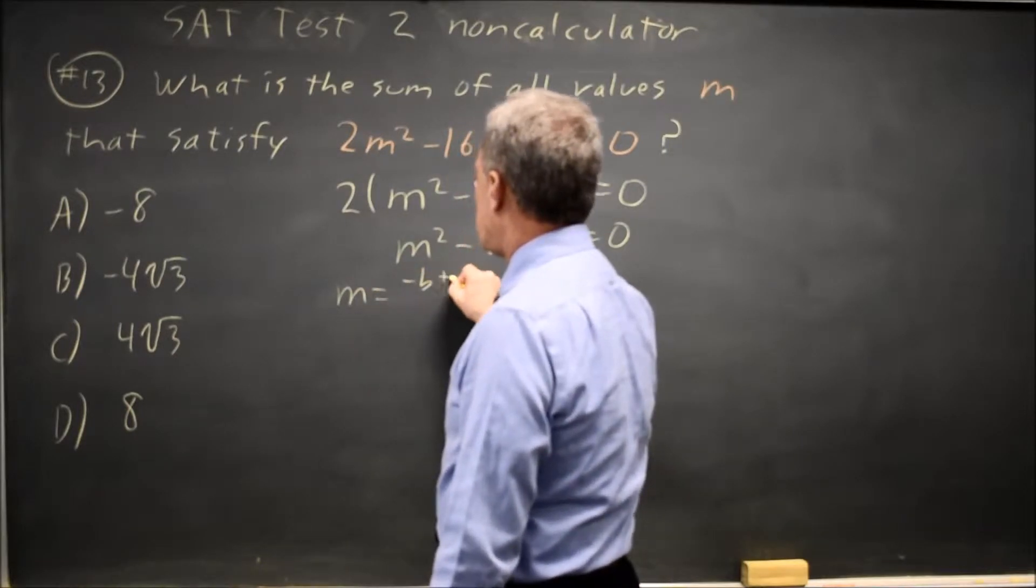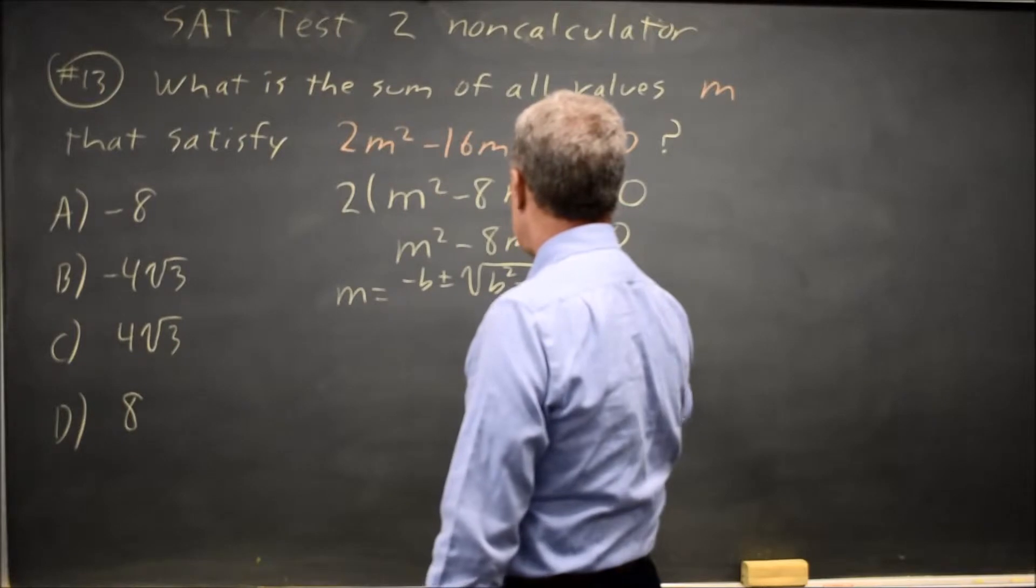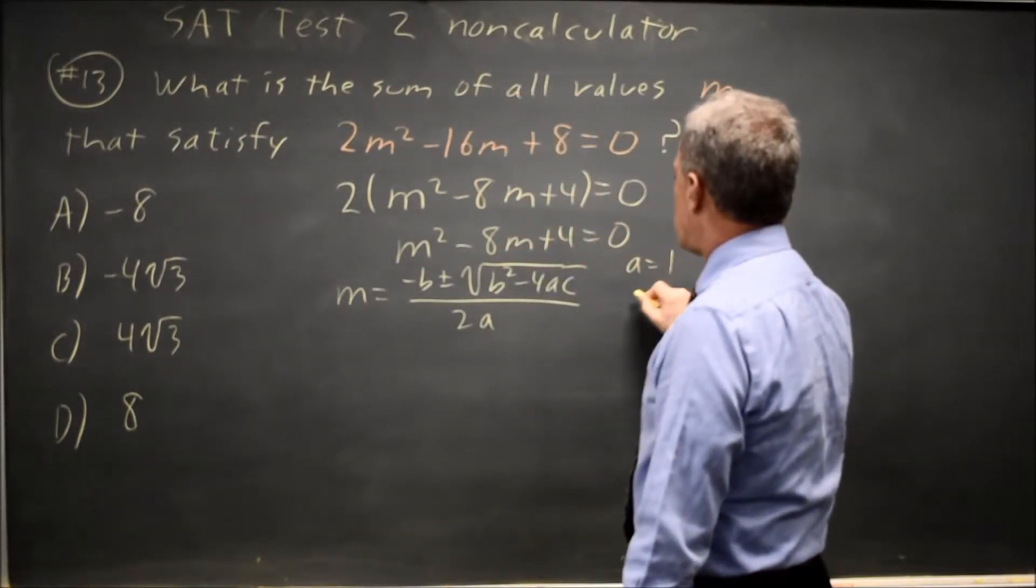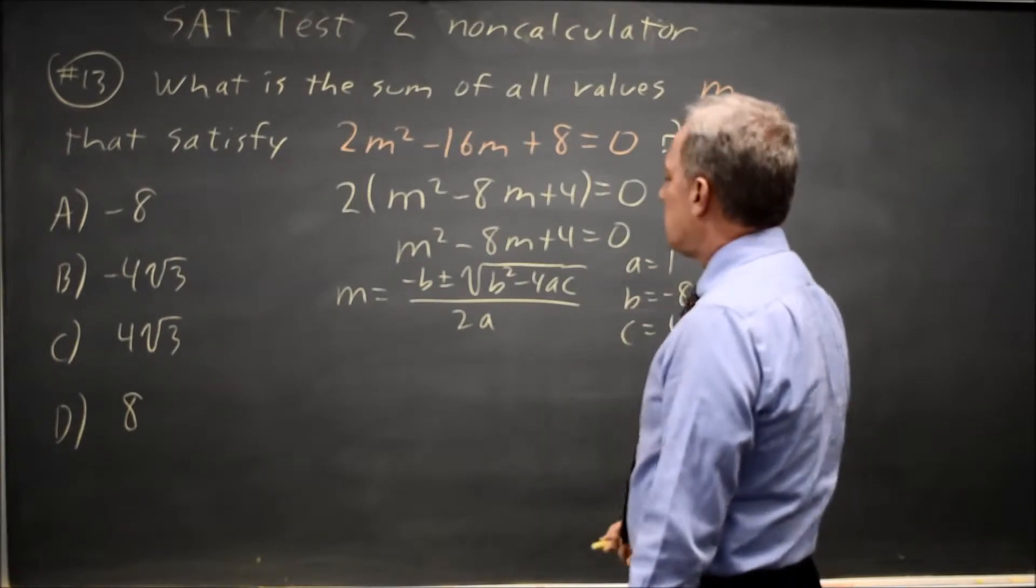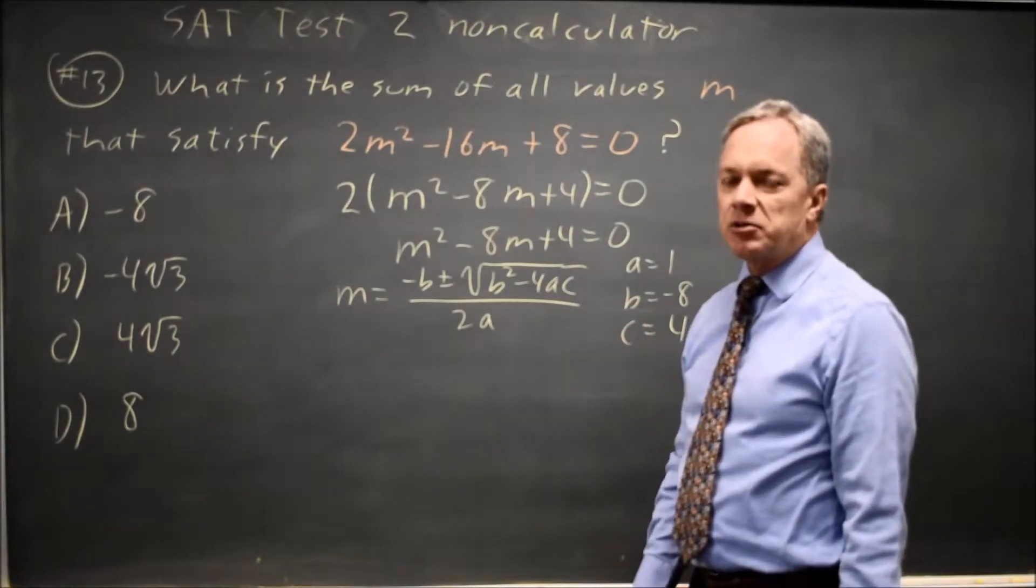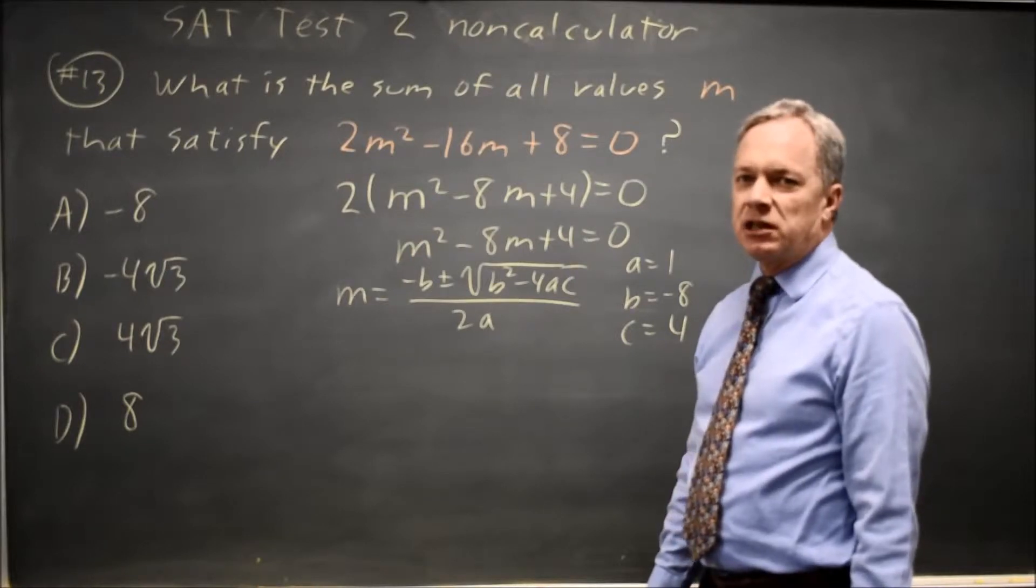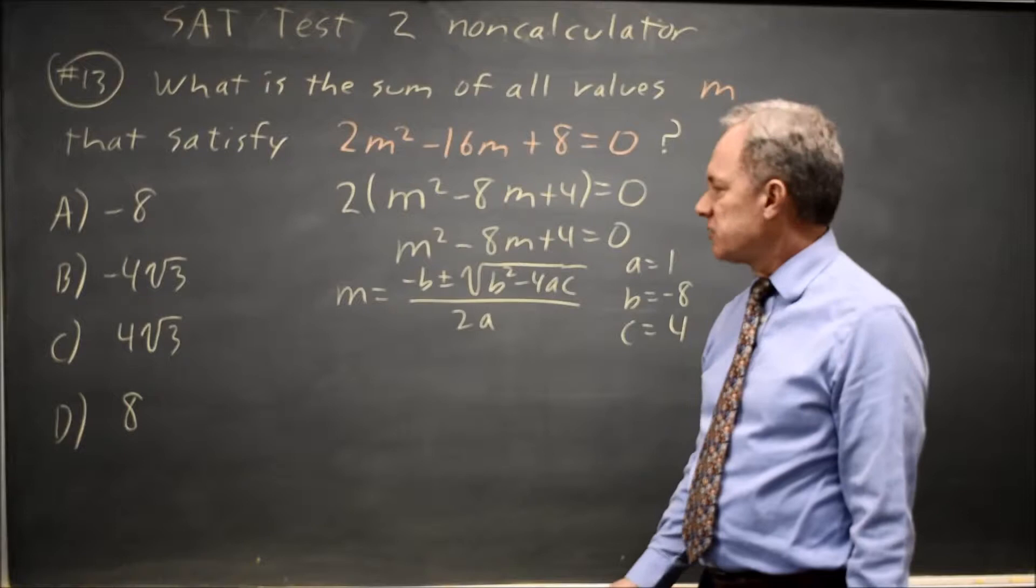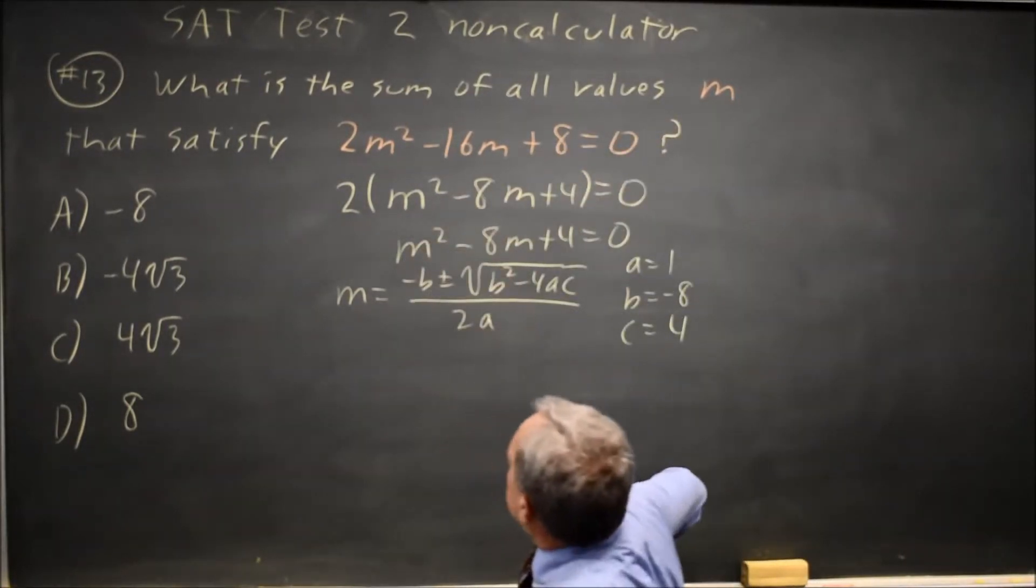m equals negative b plus or minus square root b squared minus 4ac all over 2a, where a is equal to 1, b is equal to negative 8, and c is equal to 4. I like to write my quadratic equation and write the values of a, b, and c, because that helps me avoid substituting the wrong number into any position. And especially it helps me avoid dropping negatives, because we're all good at dropping negatives, and this has helped me to reduce the number of errors I make about a type.